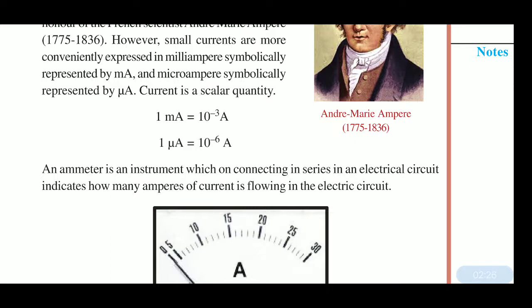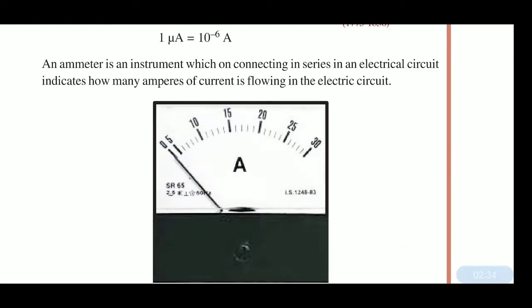1 micro ampere equals 10 to the power minus 6 ampere — this is very useful in problem-based questions. An ammeter is an instrument which is connected in series in an electrical circuit. It indicates how many amperes of current are flowing in the circuit.